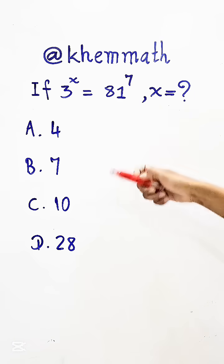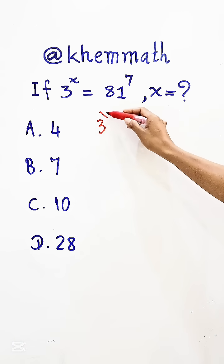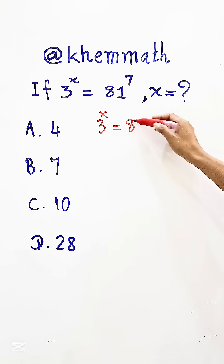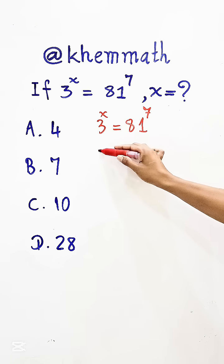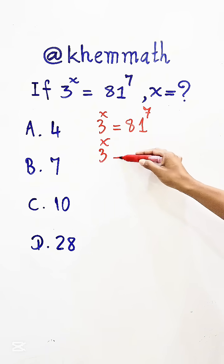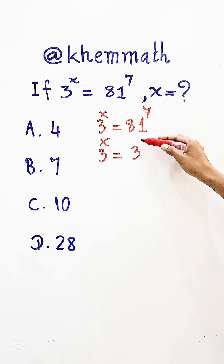Look at our equation: 3^x = 81^7. The first step is to write 81 in base 3. 81 can be written as 3^4, so we have 3^x = (3^4)^7.